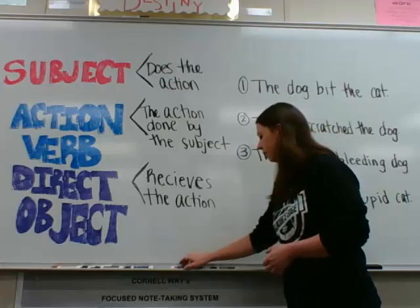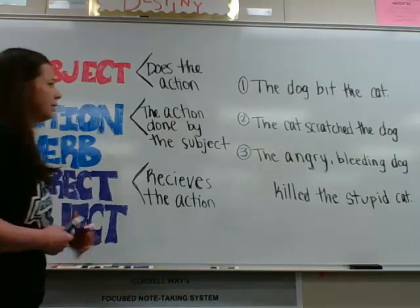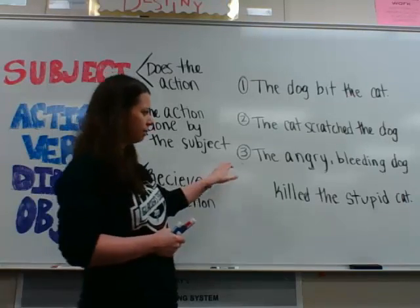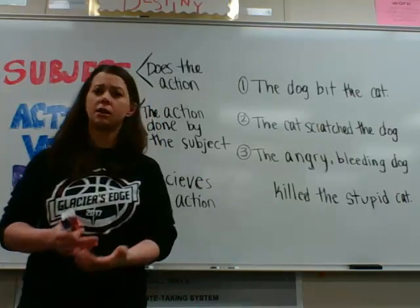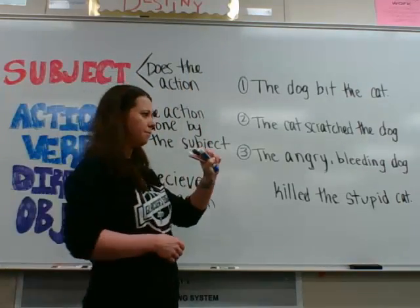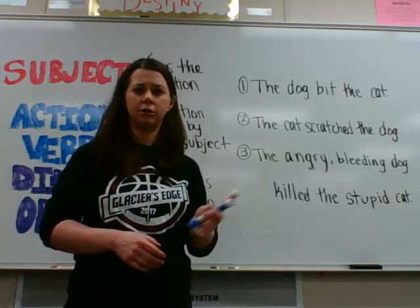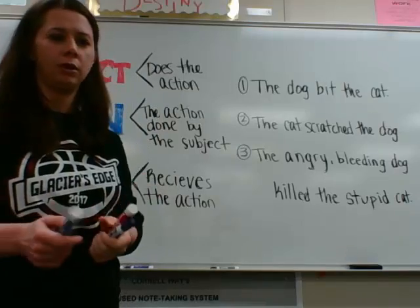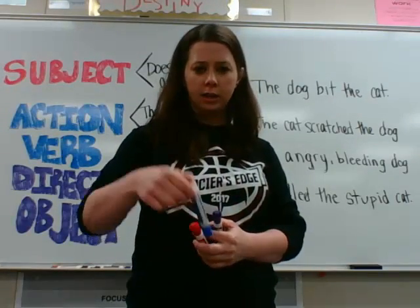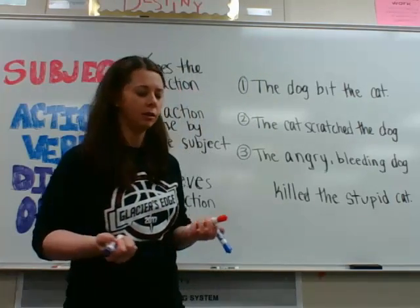I have three sentences: 'The dog bit the cat,' 'The cat scratched the dog,' and 'The angry, bleeding dog killed the stupid cat.' I'm going to label them for subject, action verb, and direct object using colors. Subjects will be labeled in red, action verbs in blue, and direct objects underlined in purple.